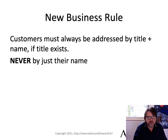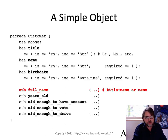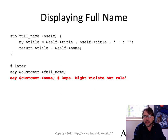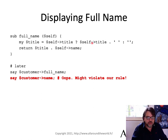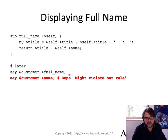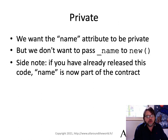We get a new business rule: customers must always be addressed by their title and name if they have a title — never ever by just their name. That's what our full_name method does. It might look like: my title equals self->title, if that's not true then you have an empty string, and then you return title concatenated to self->name. But the problem is, sooner or later someone's still going to call the name method, which violates the business rule. So you want to stop that and build a safer system. We actually want the name attribute to be private, but we don't want to pass _name to 'new.'